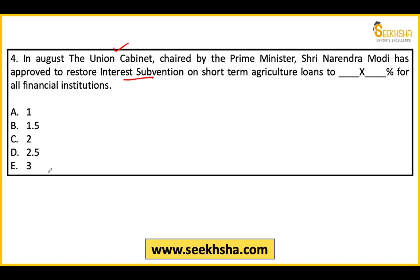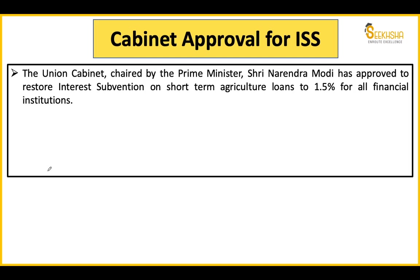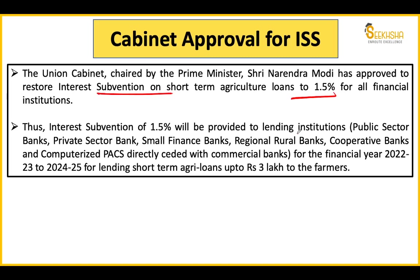The right answer for Question 4 is Option B — 1.5%. The cabinet has restored 1.5% interest subvention on short-term agriculture loans. This applies to all financial institutions — Public Sector Banks, Private Banks, Small Finance Banks, RRBs, Cooperatives, and Computerized PACs. This scheme is announced from 2022-23 to 2024-25, for loans up to 3 lakh. Remember both the 3 lakh limit and the period.